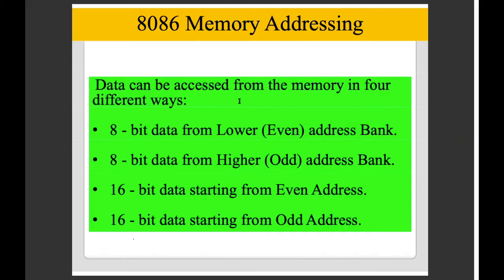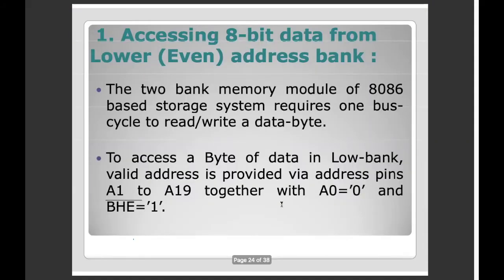The first thing is to use the lower byte — D0 to D7. Then use the higher byte — D8 to D15. We need to use BHE for higher byte access. We need to use even and odd addresses.